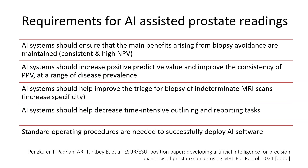Any AI should be able to ensure that the main benefits of biopsy avoidance are maintained — in other words, we want consistent and high negative predictive values. AI systems should also increase positive predictive values and improve the consistency of positive predictive values at a range of disease prevalences. The AI system should help improve the triage for indeterminate scans — in other words, increase specificity. AI should also help decrease time-intensive tasks such as outlining and reporting.